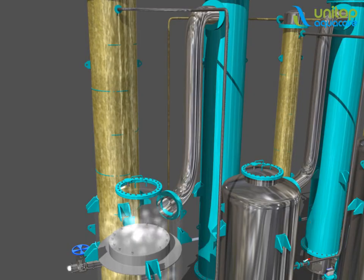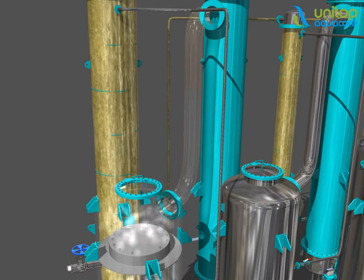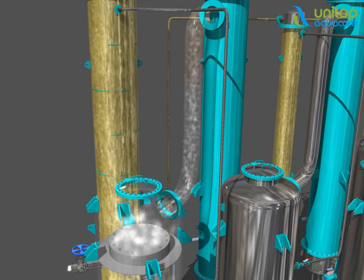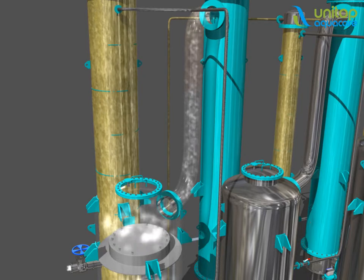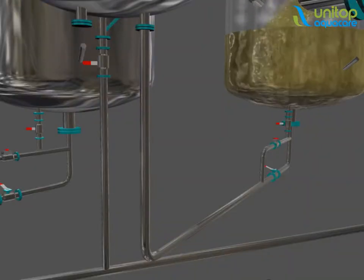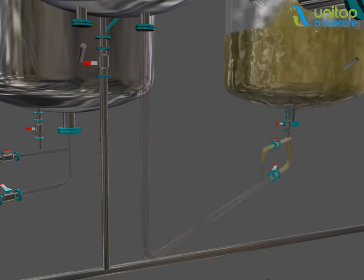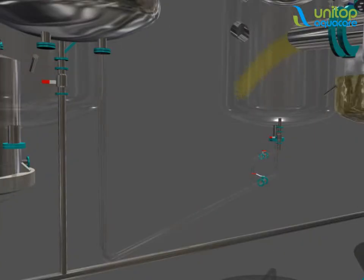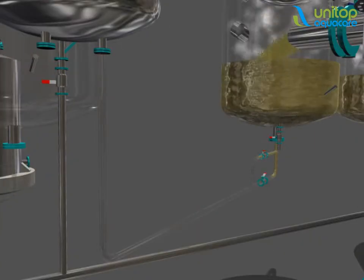The vapors generated by flashing of the liquid is taken to the next effect due to the lower pressure and used for evaporation in the next stage. The liquid gets transferred from one effect to another on account of the pressure difference, and the whole process is repeated in successive stages.